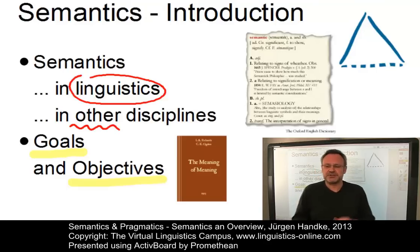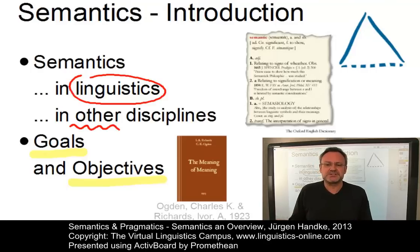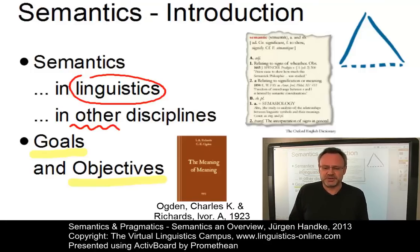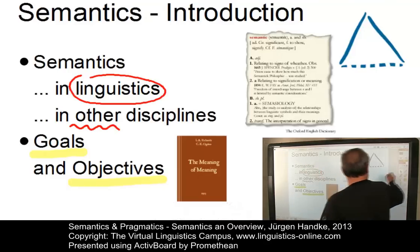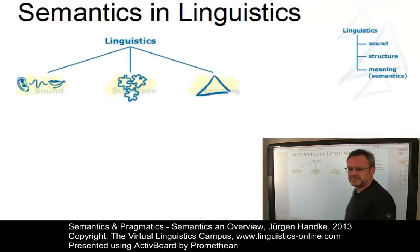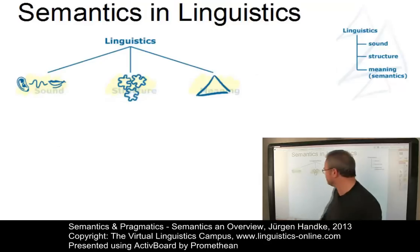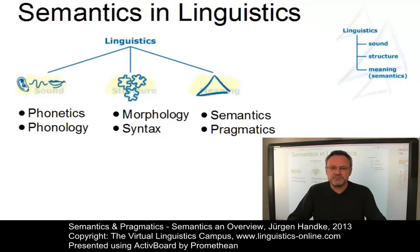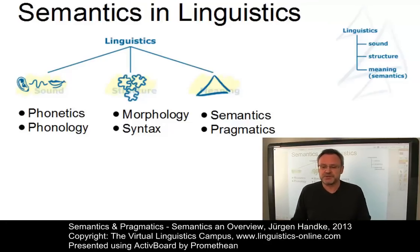Despite additional attempts around 1900, the term did not catch on until Ogden and Richards published their now famous book, The Meaning of Meaning, in 1923. Today, semantics is one of the central areas within linguistics, with ambitious goals and numerous applications and influences, but also one of the most problematic ones.